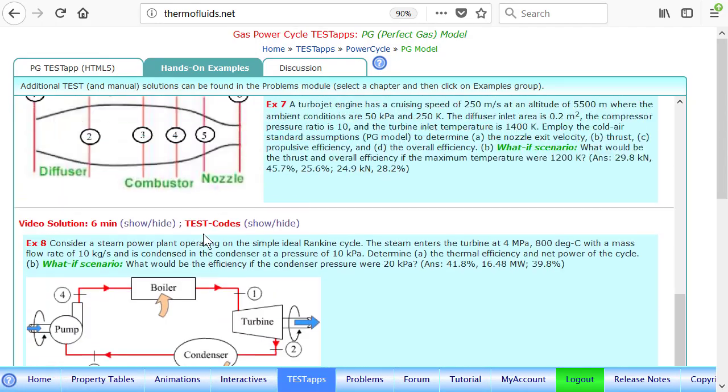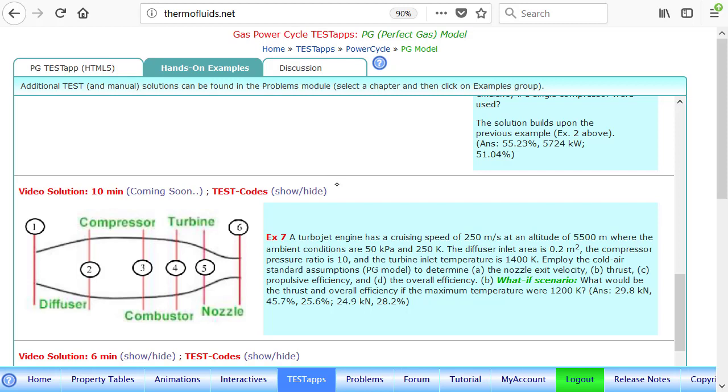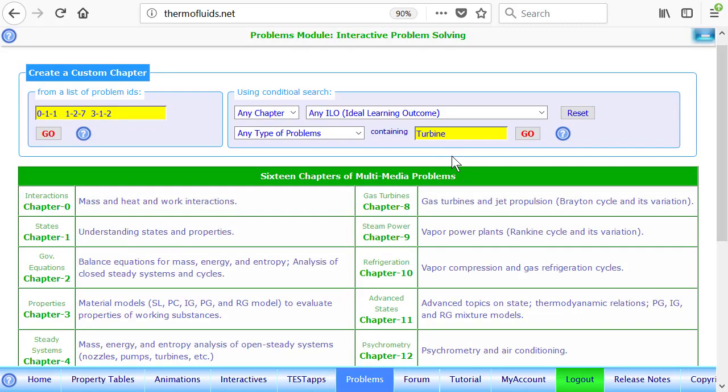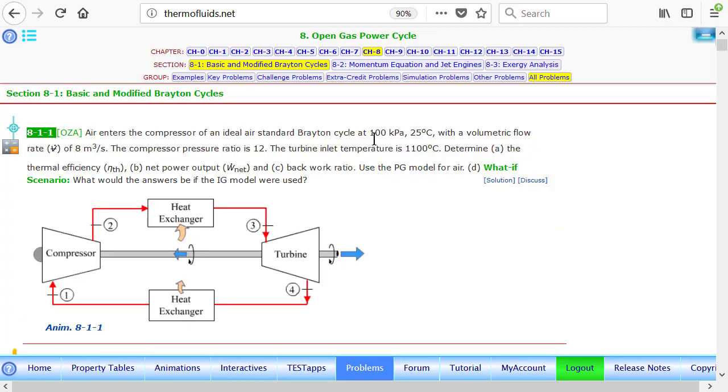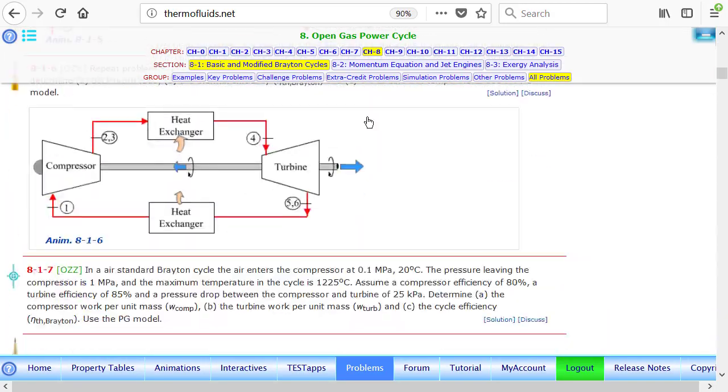Except for the diffuser and nozzle, you'll find compressor and turbine and heat exchanger—very familiar from a gas turbine analysis. So I'll stop here because the gas turbine problems can be so many, and you will find a bunch of them in Chapter 8. There's a ton of problems there, so each of them can be solved using TEST steps.